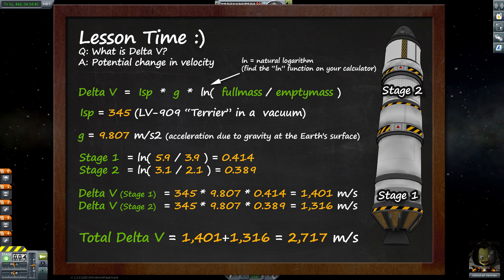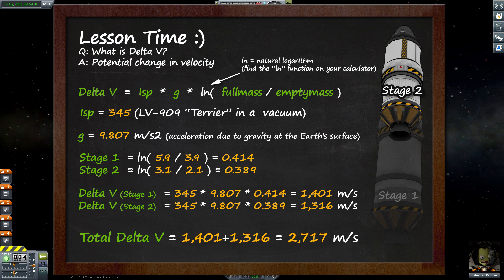Keep in mind that our craft up in orbit is already doing around 143 metres per second. So for stage 1 we add our 1,401 metres per second on top of that, giving us around 1,544 metres per second. For stage 2 we would again add on another 1,316 metres per second, so the end velocity after stage 2 firing should be around the 2,860 metre per second mark.